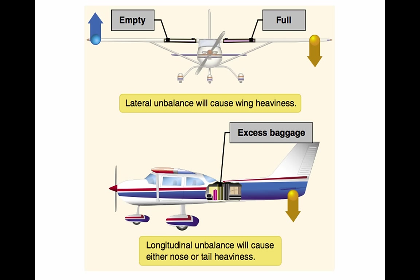The forward CG limit is often established at a location determined by the landing characteristics of an aircraft. During landing, exceeding the forward CG limit may result in excessive loads on the nose wheel, a tendency to nose over on tail-wheel type airplanes, decreased performance, higher stalling speeds, and higher control forces. In extreme cases, a CG location beyond the forward limit may result in nose heaviness, making it difficult or impossible to flare for landing. Other undesirable effects caused by a CG location aft of the allowable range may include extreme control difficulty, violent stall characteristics, and very light control forces, which make it easy to overstress an aircraft inadvertently.